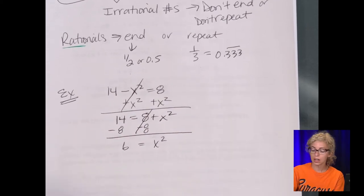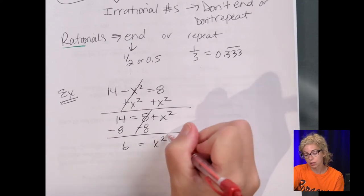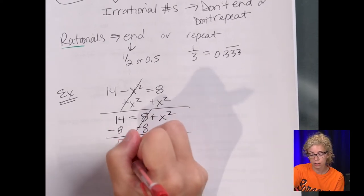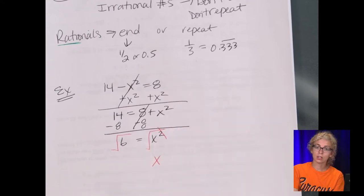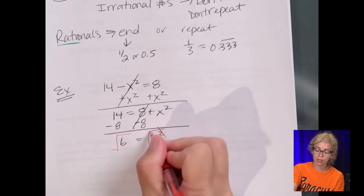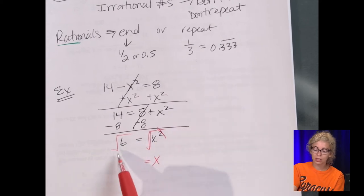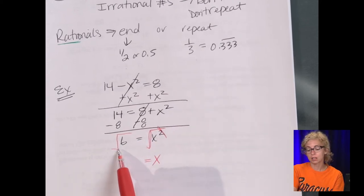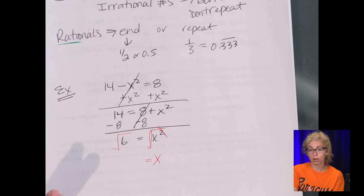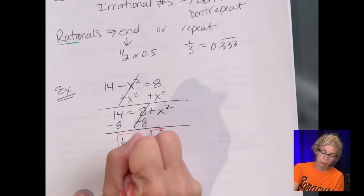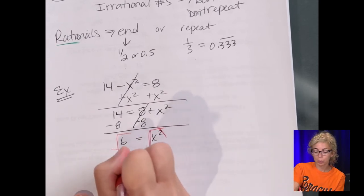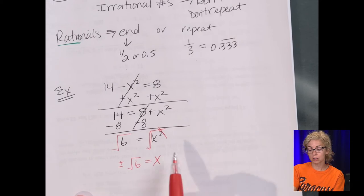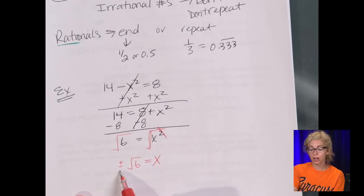Once you isolate that x squared, now we do the inverse operation. So the opposite of squaring is the square root. Square root of x squared is just x. So it gets rid of that, it gets rid of the exponent. And then we look to see if we can simplify 6. Now the only factors of 6 are 1 times 6 and 2 times 3. None of which are perfect squares. So my answer is radical 6, but we have to include the plus minus out front.